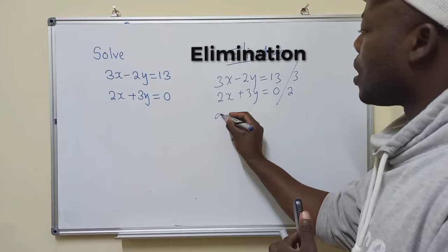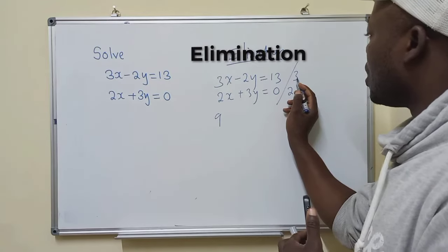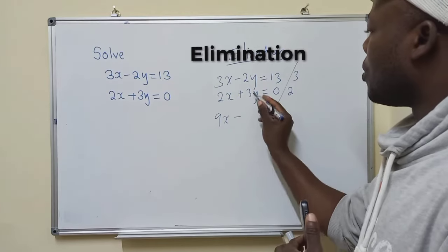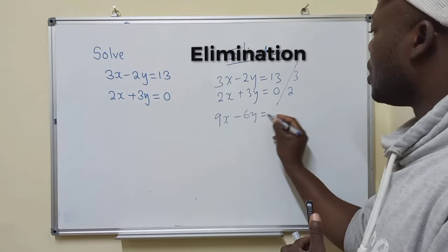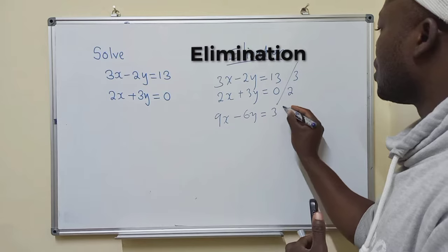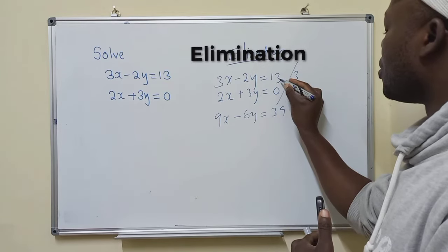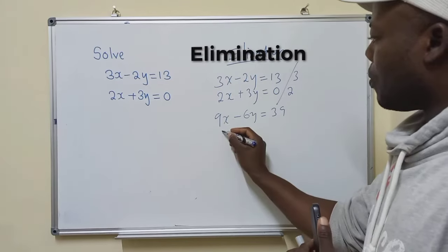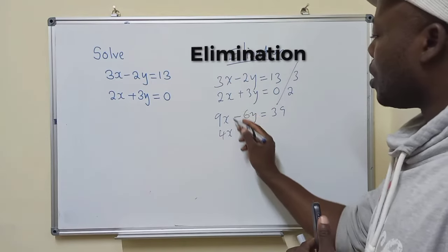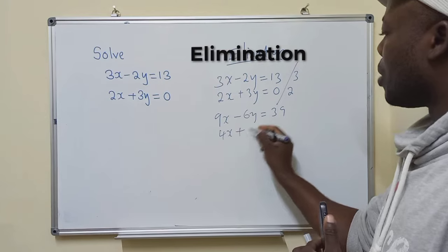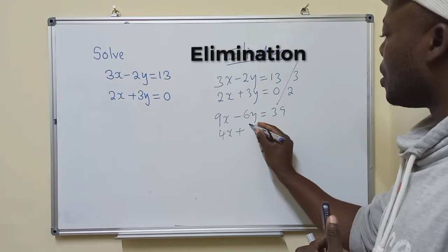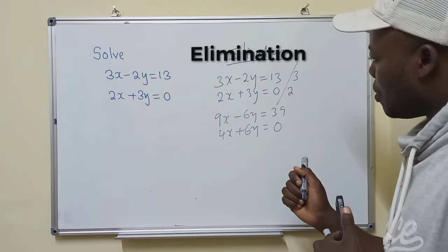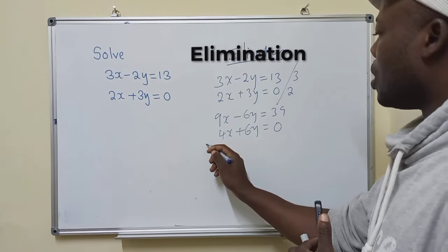And then you multiply. We've got a 9, because 3 times 3 is 9x. Here we have 6y. Here we have 39, because 13 times 3 is 39. Here we have 4x. 2 times 2x is 4x plus 2 times 3y is 6y, which equals 0.